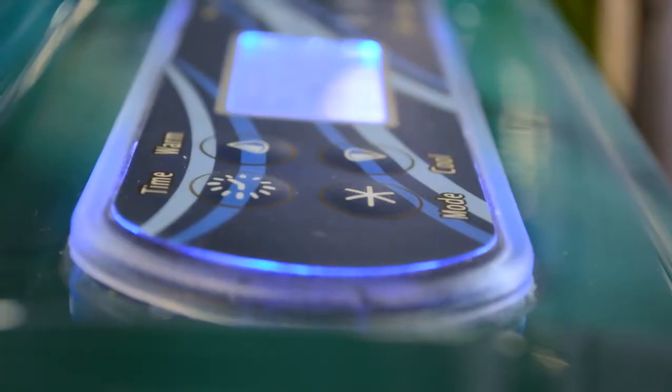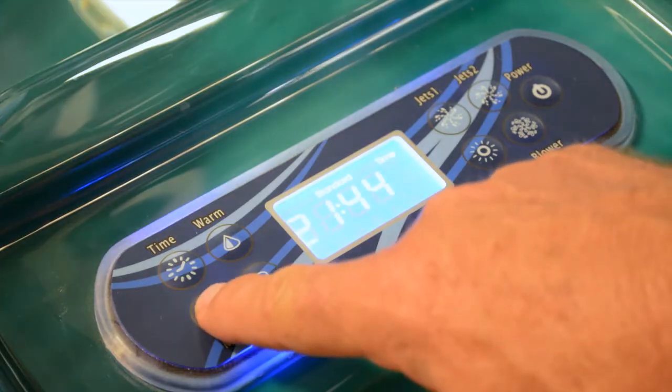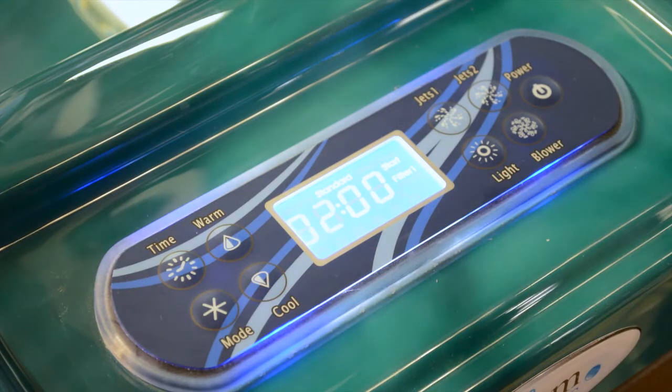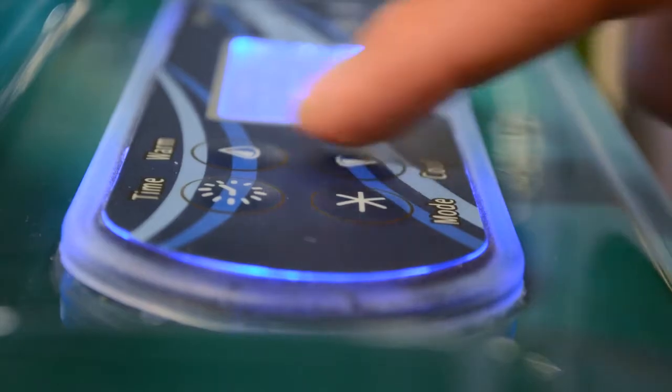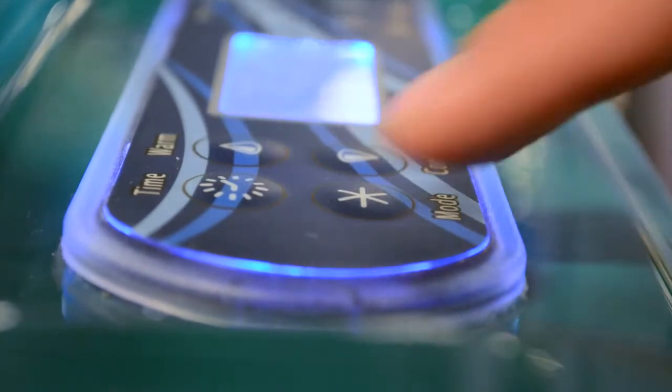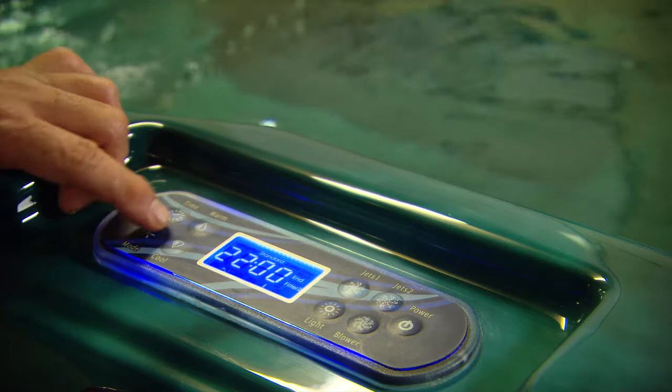To set the filter times, press the time button once, then the mode button three times. Then set the start and end times of each of the two filter periods using the warm or cool buttons, followed by the mode button to confirm your settings. Two hours per filter period is suggested, but this can be increased in times of heavy use.